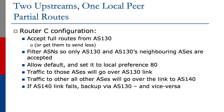The summary of this: router C configuration accepts the full BGP table from AS 130 — or we could get them to send less, but very few operators these days will actually permit this; it's usually full BGP table or defaults. We filter the AS entries we get from AS 130 such that only AS 130 and AS 130's neighboring ASs are accepted. We allow the default route and set it to local preference 80.